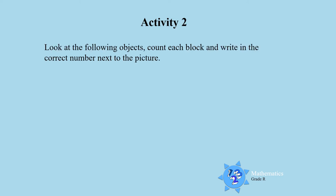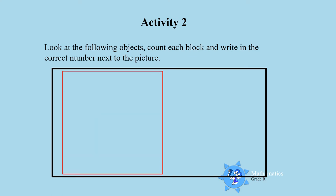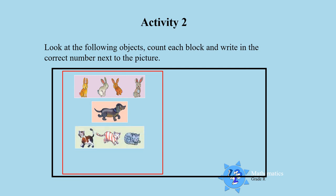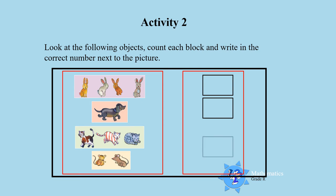Activity 2. Look at the following objects. Count each block and write in the correct number. Look at the objects boys and girls. What do you see? You must count them and then you must write the correct number in these blocks. Let's see if you can do this everybody.